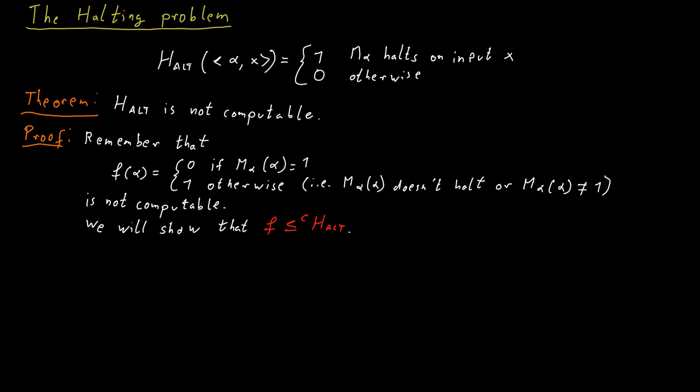we will argue that if we have a machine that has access to an oracle for the decision problem HALT, then we could also solve this problem F. And that leads to a contradiction because we know F cannot be solved.